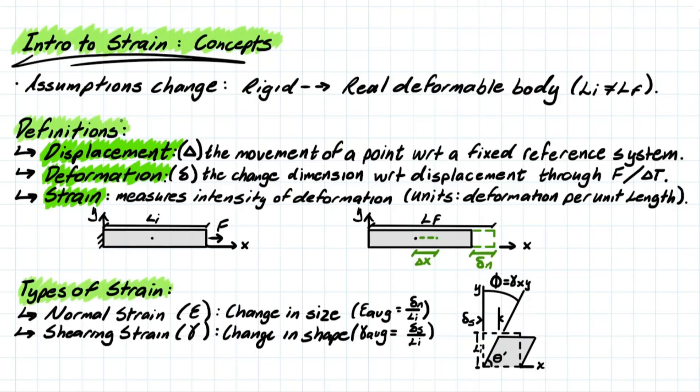Now, important definitions we need to know before hopping in are displacement, which is something we've covered before, which is represented by this delta here, this triangle. And it pretty much means the movement of a point with respect to a fixed reference system.